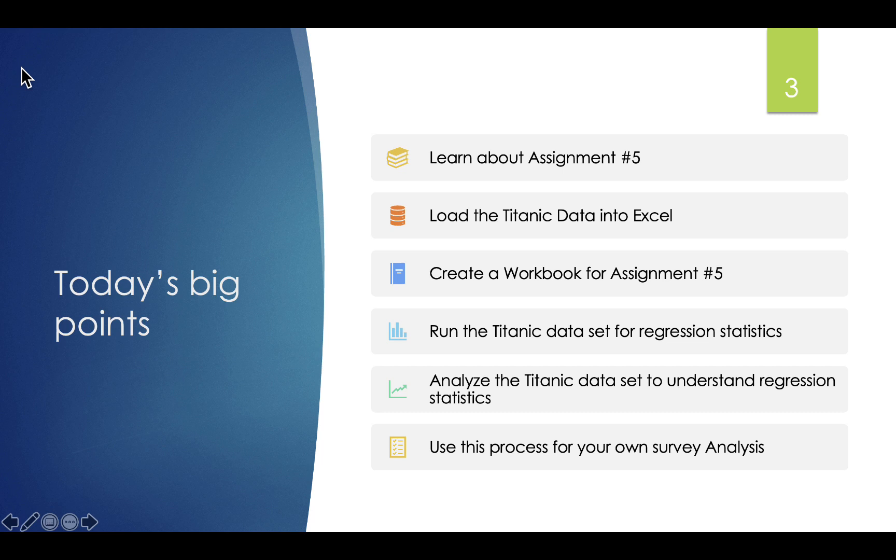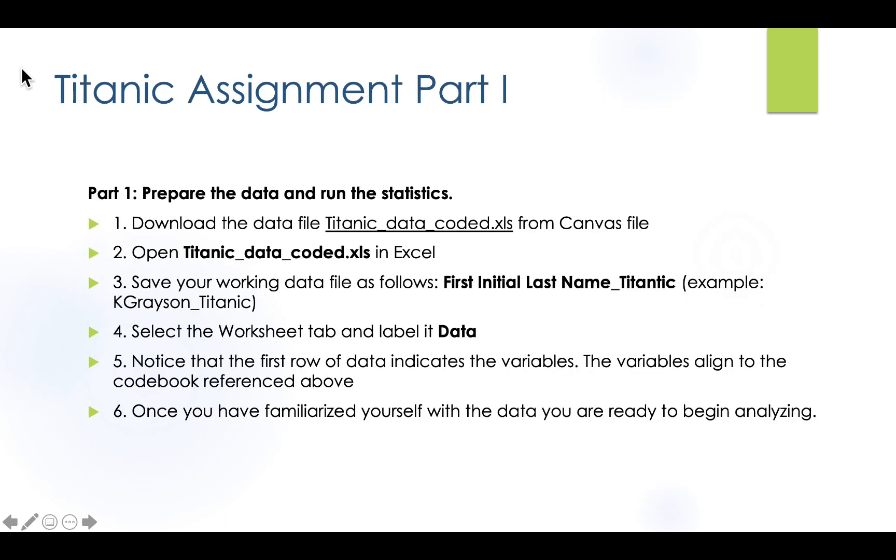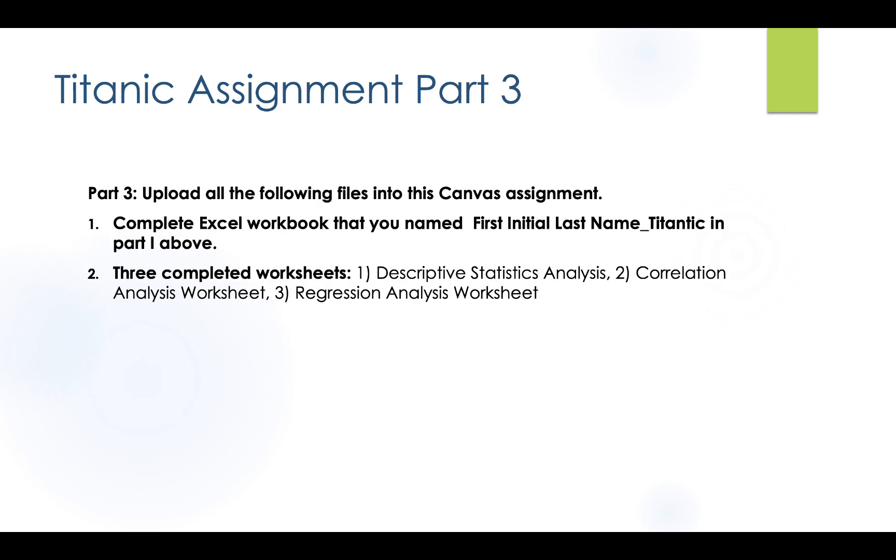Alright, so we've gone through the assignment several times and today we are going to run a regression on your Titanic data set and use this process for your own survey analysis. You're very familiar now with the data analysis for prepping for the Titanic. Where we are at now, we are on part two, conducting a statistical regression analysis and using that worksheet. Now one note, remember for the assignment, turn in all of the pieces at once. You're going to turn in your data file, your workbook, you're going to turn in your three worksheets that we've been working on all at one time. If you turn them in individually and come back and forth, it will erase everything. So turn them in all at one time.